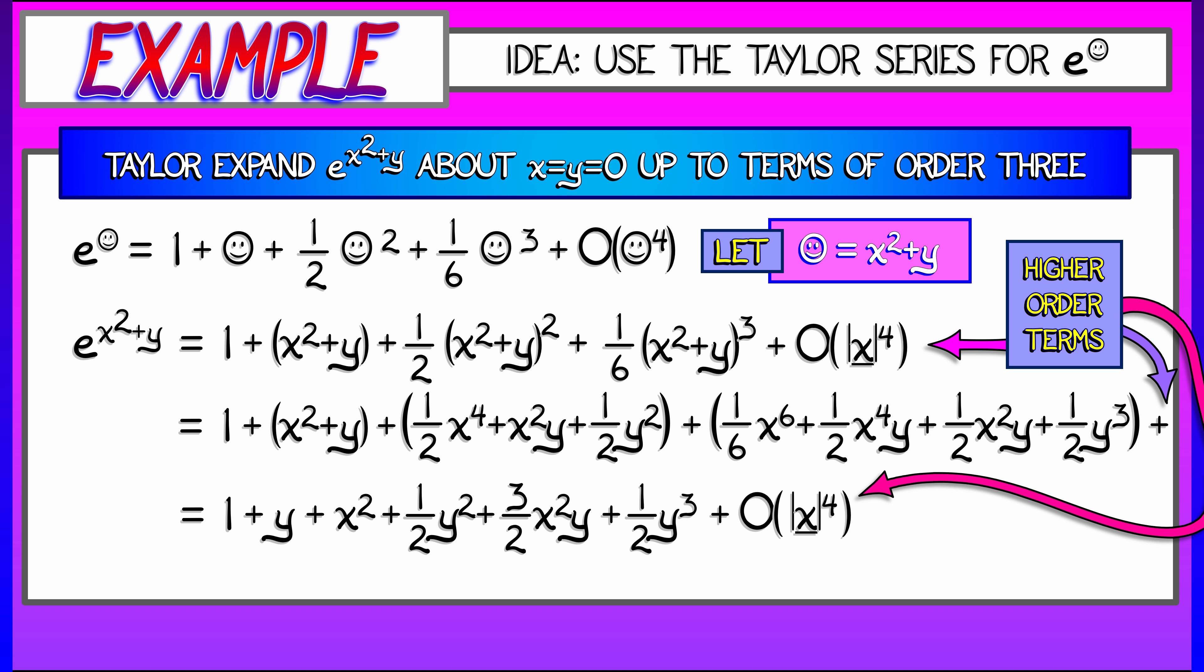And you will be left with the answer, which is 1 plus y plus x squared plus 1 half y squared plus 3 halves x squared y plus 1 half y cubed plus big O of the other stuff, right? Fourth order terms. That's it. It works. But I wonder, why does that work? I mean, is there a good reason for it? Is this just a thing that you memorize?